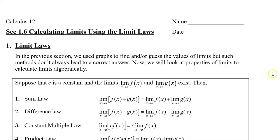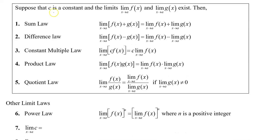Before we look at examples, let's take a look at what the limit laws are. Suppose that c is a constant, and we have the limit of f of x as x approaches a and the limit of g of x as x approaches a, and let's say those limits exist. Then we have these five laws. The sum law and the difference law are very similar — if two functions are added or subtracted, we can find the limit of each function separately and then add or subtract the limits.